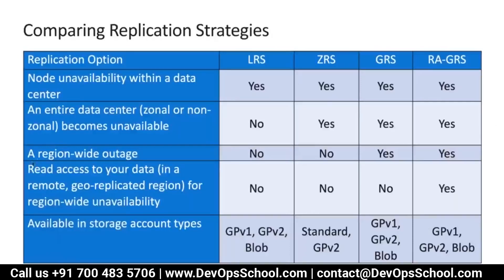If a region-wide outage happens because of a natural disaster in that geographical region, LRS and ZRS within the same region will be of no use. In that case, you need a BCP site at a different geographical region. And if you want read access from the remote site as well, RAGRS would be the appropriate option.